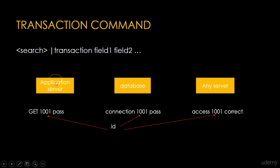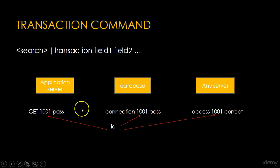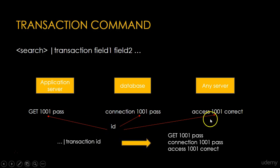Here is the example. You can see three different components: application server, database, and any other server. If any user clicks in the application, then these three events or logs are generated in three different components. You can see there is one common ID 1001 in all three different events. You can write a search to get all logs or events from the application server, database, and any other server, then use the Transaction Command with field ID.